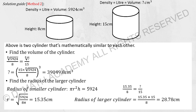Moving on to the second solving method for the cylinder: for volume, we cube root it instead. So cube root of 5,924 over 8 equals cube root of unknown over 15. After calculation, we get the same result of 39,049.8 cm³.